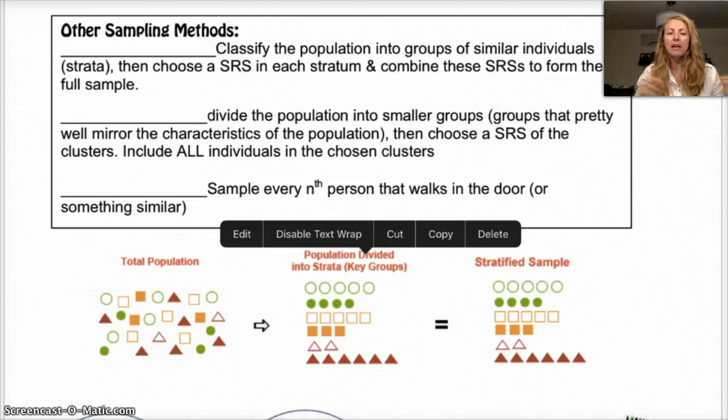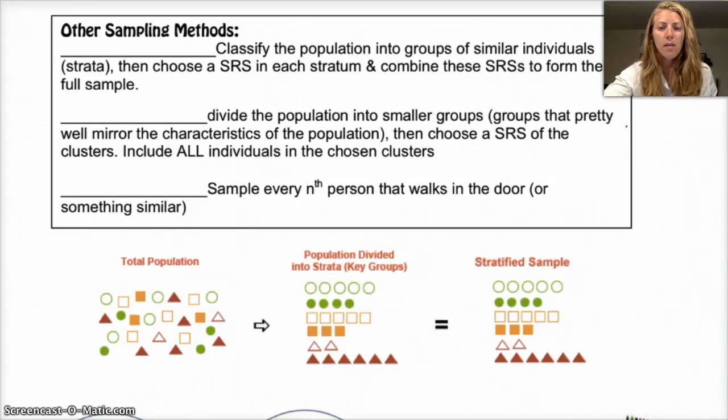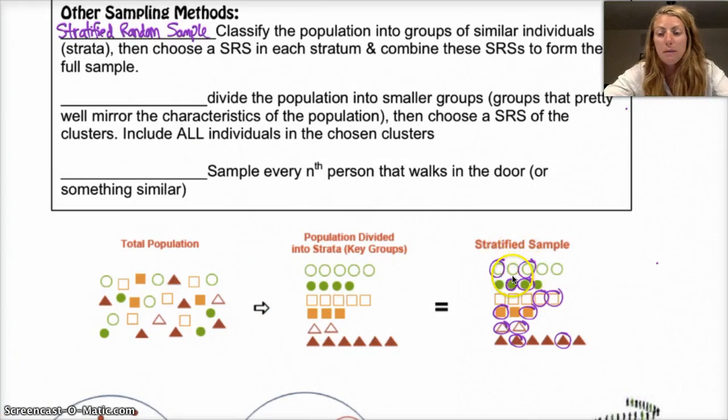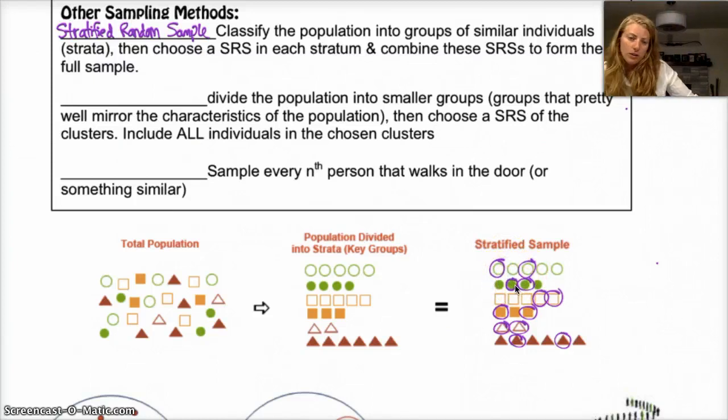There's three other sampling methods that we're going to go over. So stratified random sample classifies the population into groups called strata. And they're based off of a similar characteristic. So maybe you put all the people with blonde hair in a group, and all the people with brown hair in a group, and all the people with red hair in a group, and all the people with black hair in a group, and so on. And then from each of those groups, you take a few random individuals. And what that does is it gets some representative of all different hair types. The idea with this one is that you'd randomly select maybe two of each group. So that's kind of what I did here by circling two of the green open circles and two of the green closed circles. So basically they're broken up into strata, and then you randomly select within the strata.